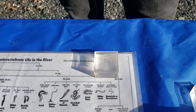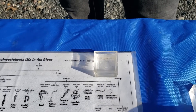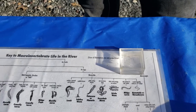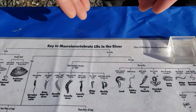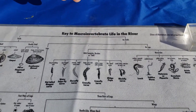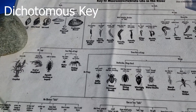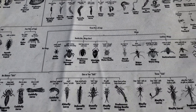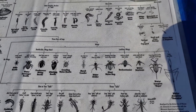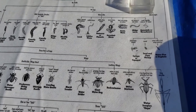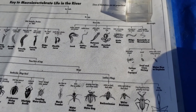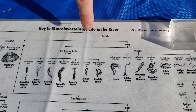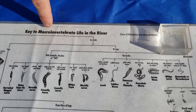Now that we're ready to identify this little bug, let's discover how we identify a macroinvertebrate. Here we have a key to identifying macros called a dichotomous key. This key shows all of the different traits of macroinvertebrates like shells, legs, and wings. All you have to do is start at the top of the key and answer the questions on the way down based on your observations.